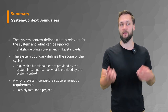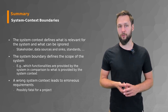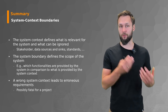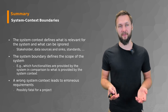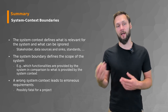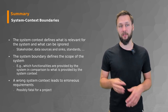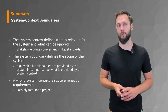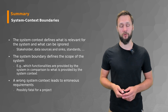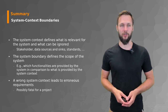A wrong system context leads to erroneous requirements, which is possibly fatal for a project. We discussed the existence of grey zones in the system boundary, which should be resolved by the end of the requirements process, and grey zones in the context boundary, which should be minimized but may not be completely gone at the end of the requirements engineering process. Finally, we extended our knowledge on the types of requirements in more detail.